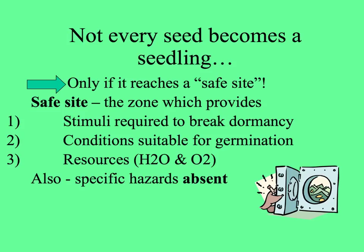The safe site is the zone that provides everything the seed needs for establishment: the stimuli required to break dormancy, whatever kind of dormancy the seed might have, and conditions suitable for germination and resources.